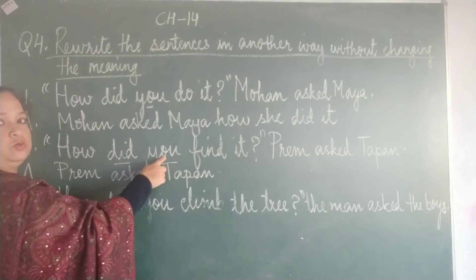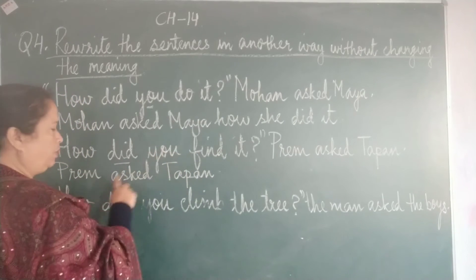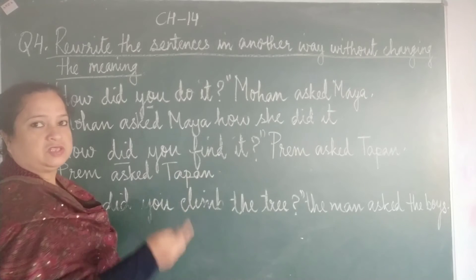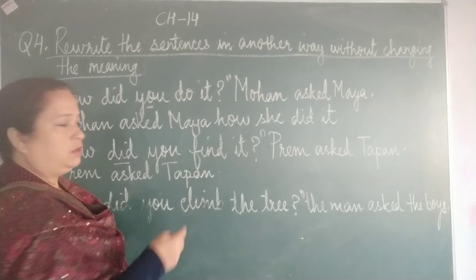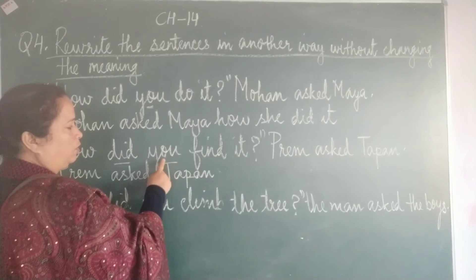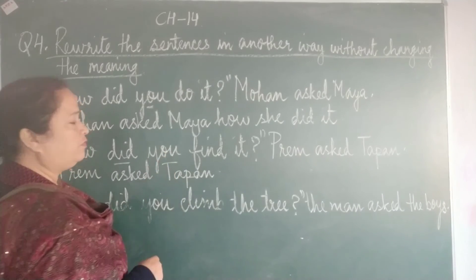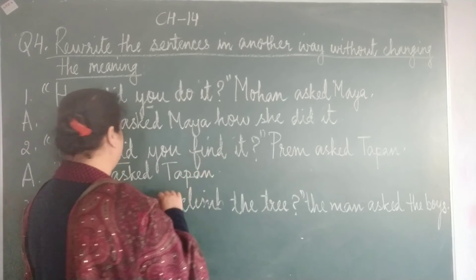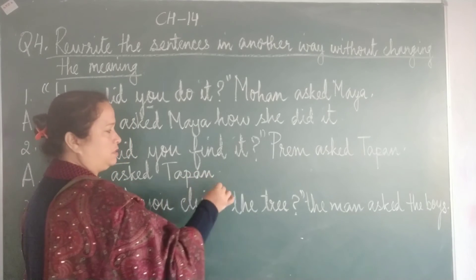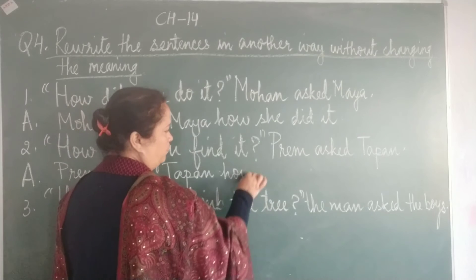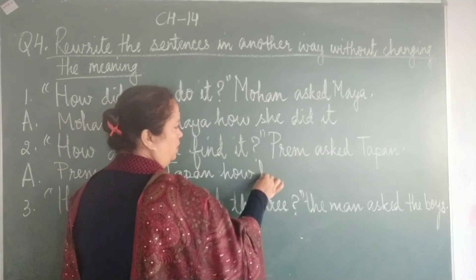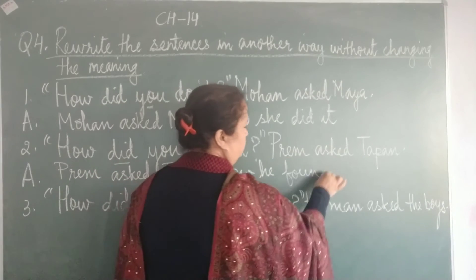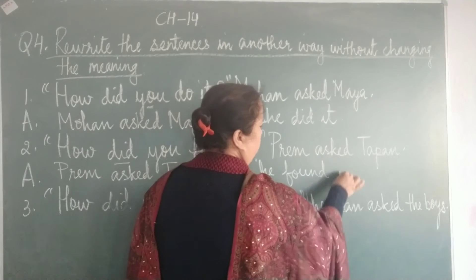So why did we replace 'you' with 'he'? Because Prem is asking Tappan. So we change the pronoun and we write 'he' instead of 'you'. So Prem asked Tappan how he found it.